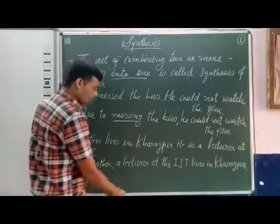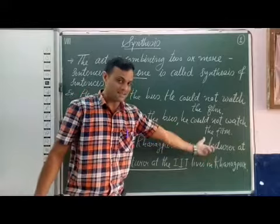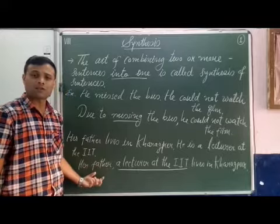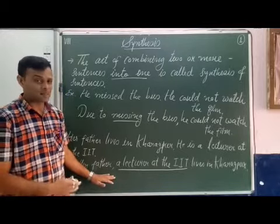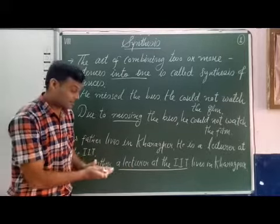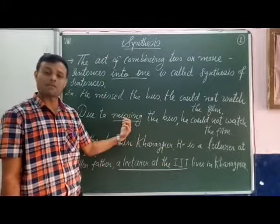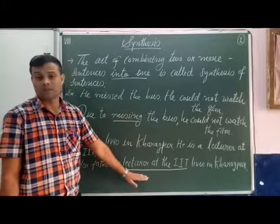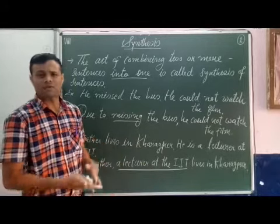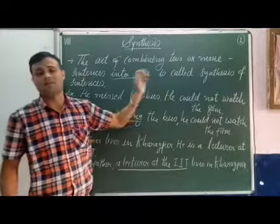If you see what we have used here — 'a lecturer at the IIT' from the second sentence has been placed with 'her father.' Her father is the subject and it is a noun, so here we have used noun apposition to combine the two sentences. In the first example we used present participle; here we used noun apposition. So, without using a conjunction, when we combine two sentences, it is called synthesis of sentences.